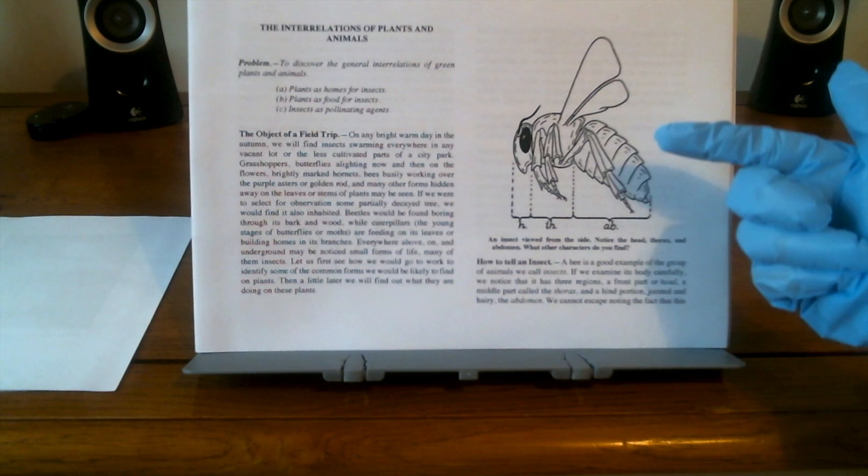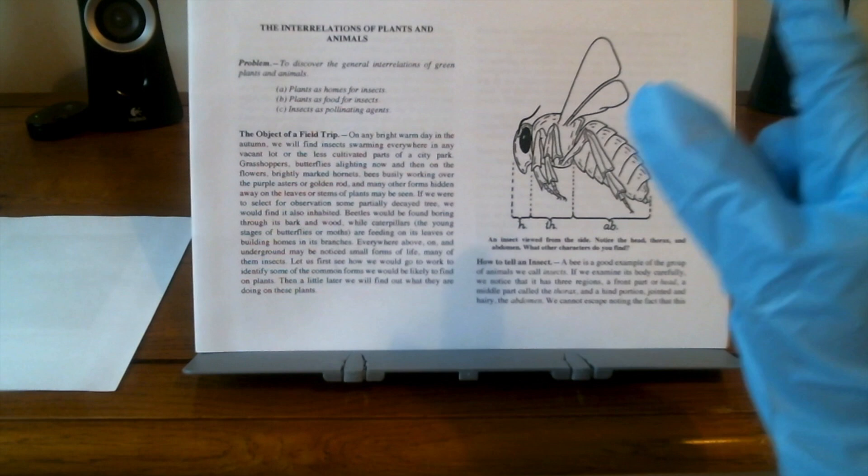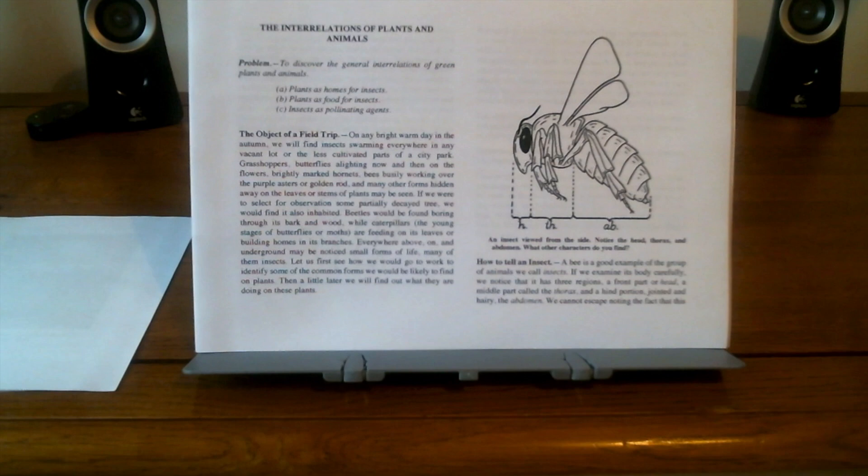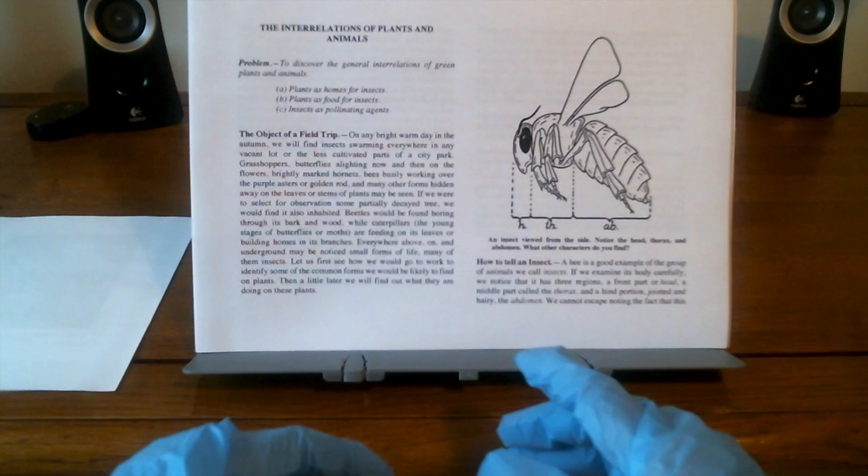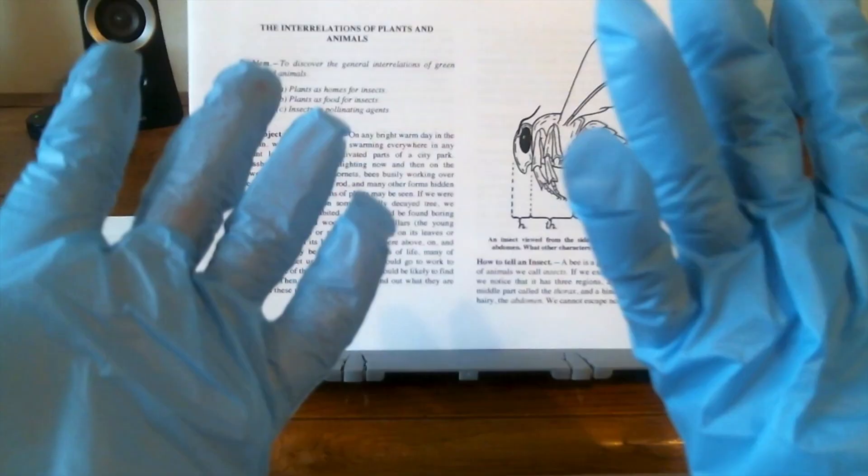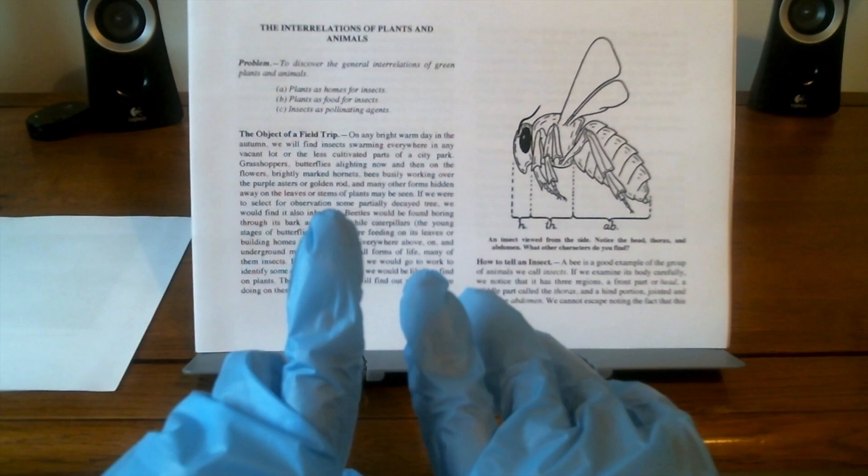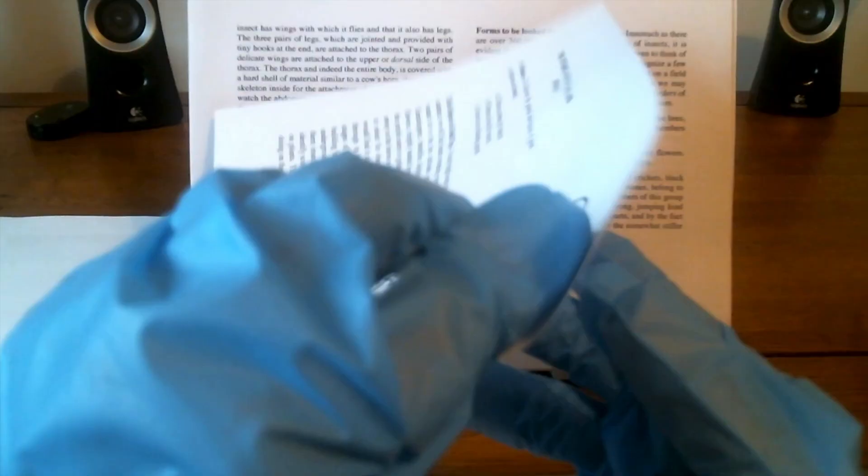So let's talk now about how to distinguish what is an insect. Looking at the diagram, here we see an insect viewed from the side. Notice the head, thorax, and the abdomen. So, how can we tell what is an insect? A bee is a very good example of the group of animals we can call insects. If we examine the body of a bee carefully, we can notice that it has three regions, like the diagram above. In other words, the head, the thorax, and the hind portion, which on insects we call the abdomen. Let's move on.